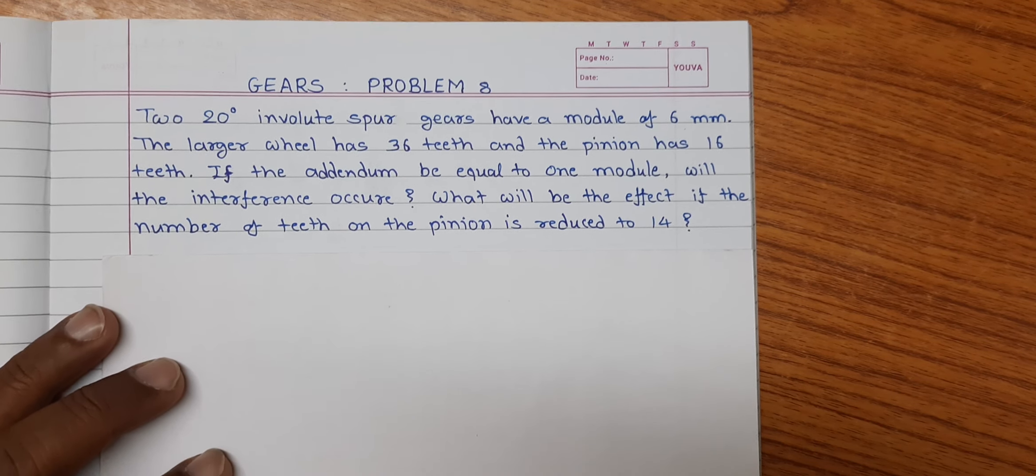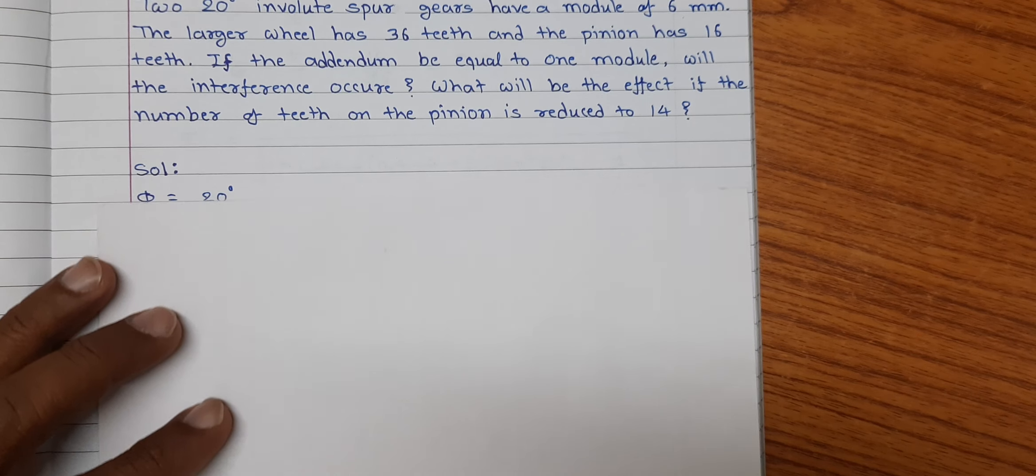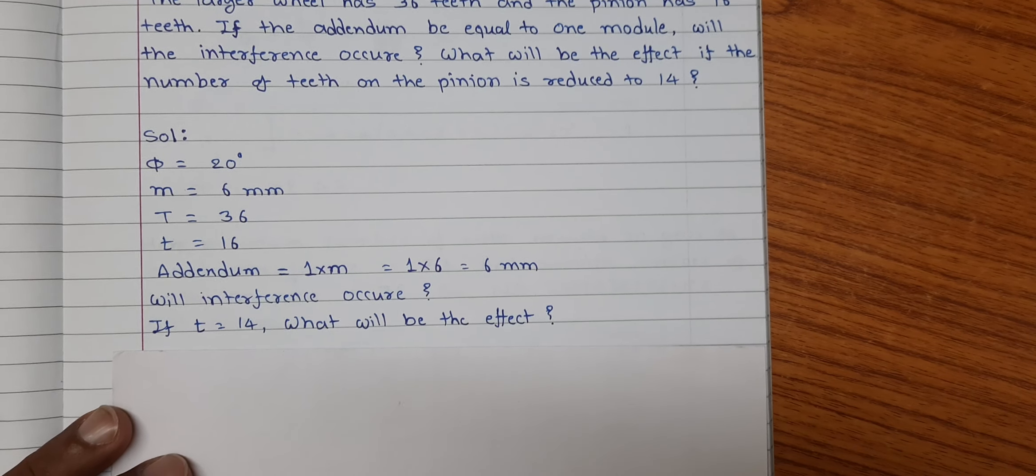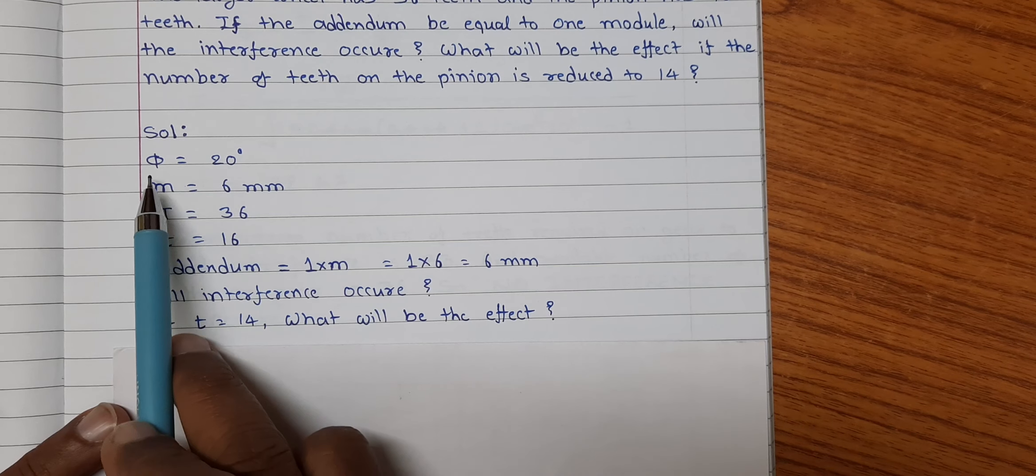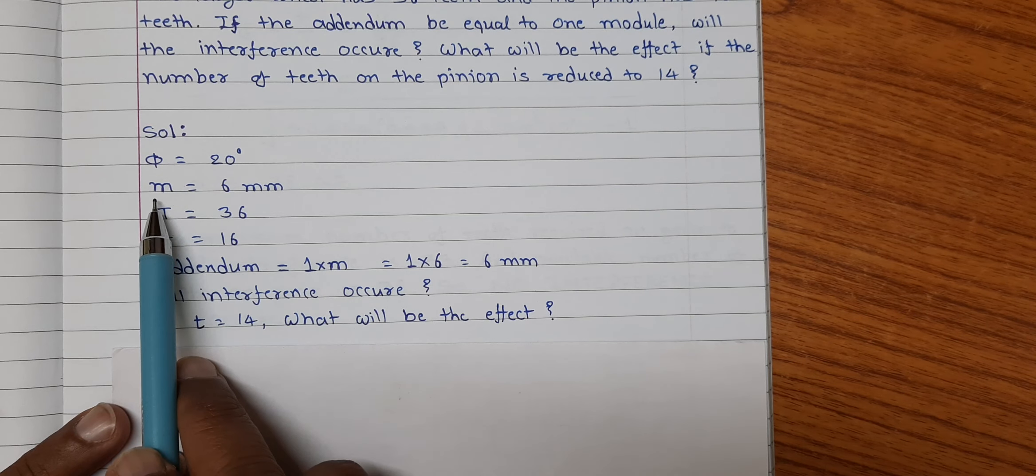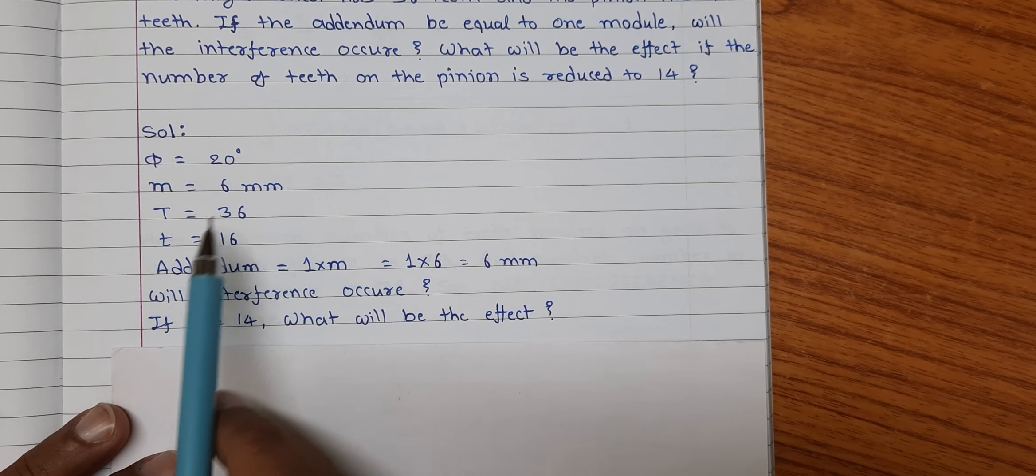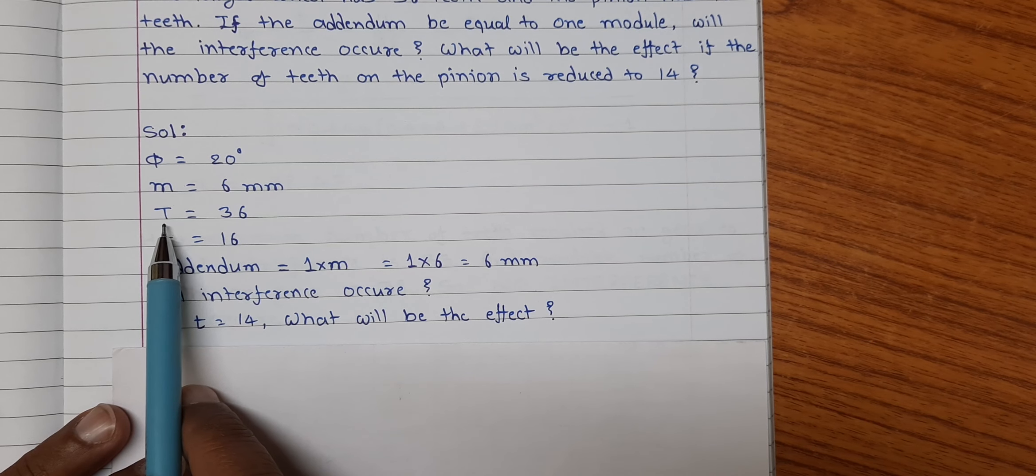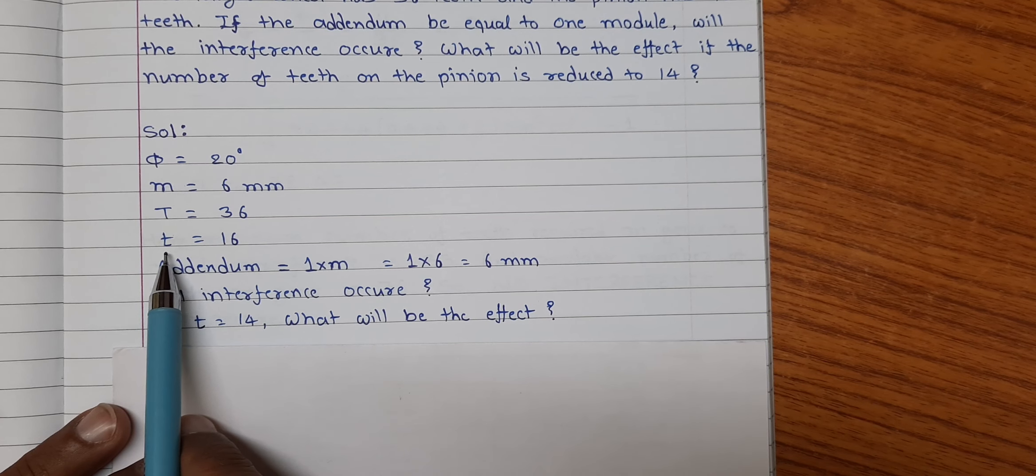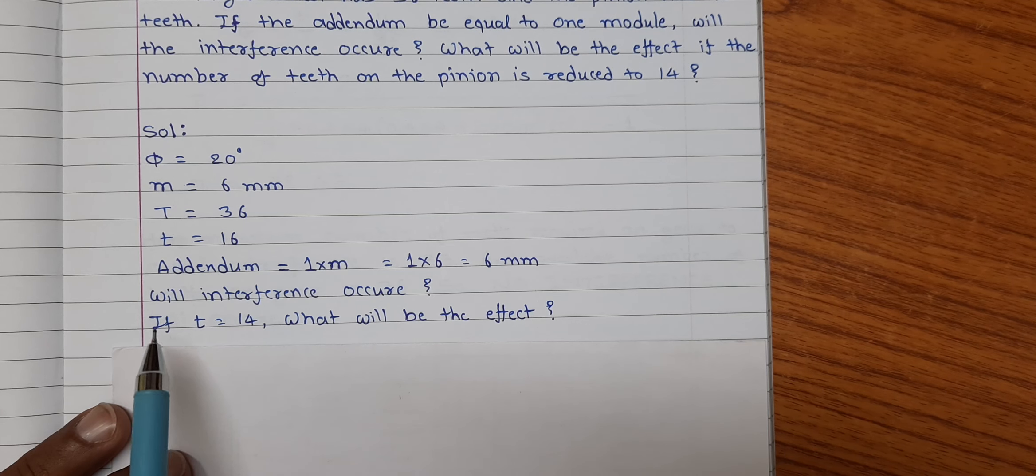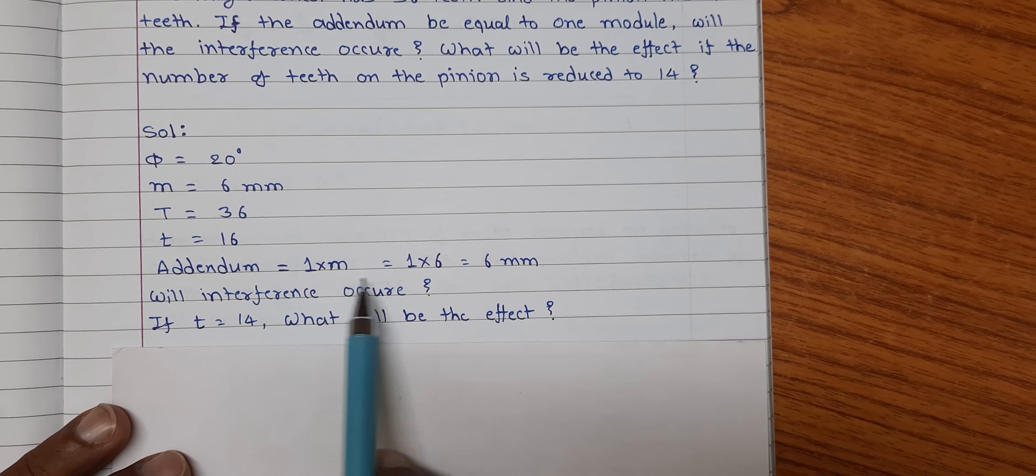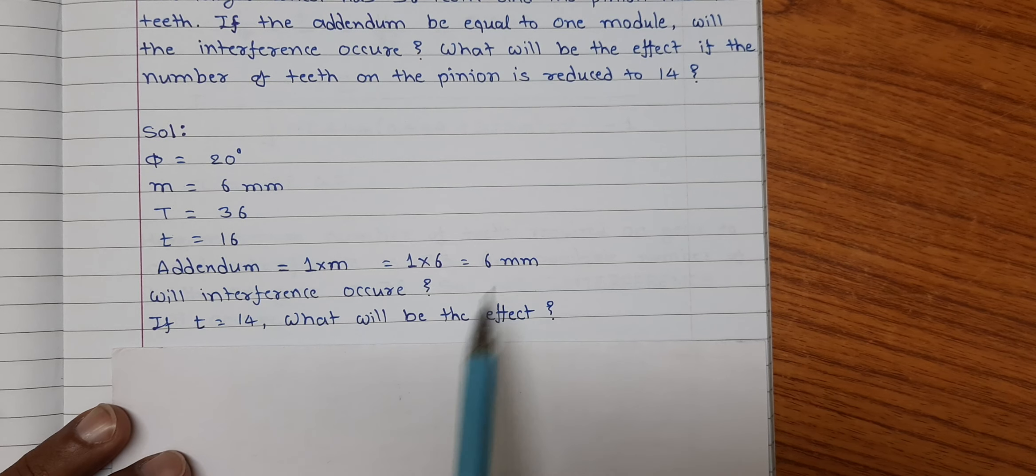Friends, let us note down the given information first. Here, the pressure angle phi is equal to 20 degree. Module M is 6 mm. Number of teeth of gear is 36 and number of teeth of pinion is 16. Addendum is given 1 times module, that is 1 into 6 equal to 6 mm.